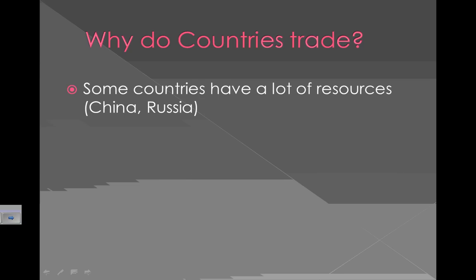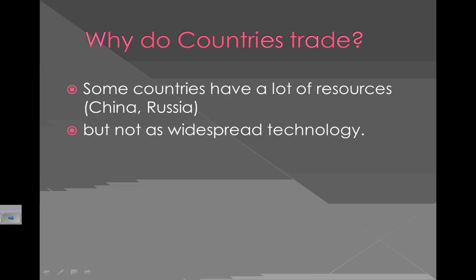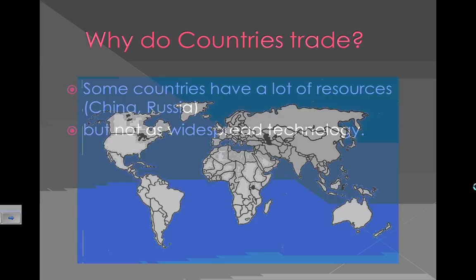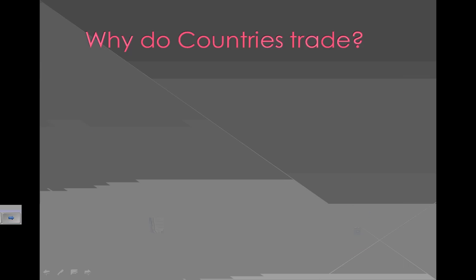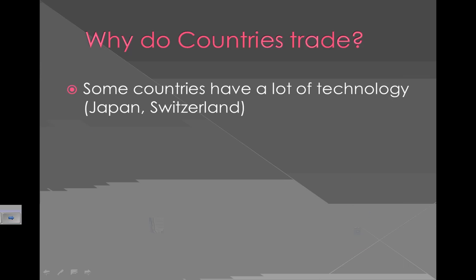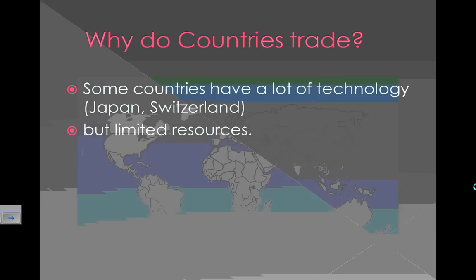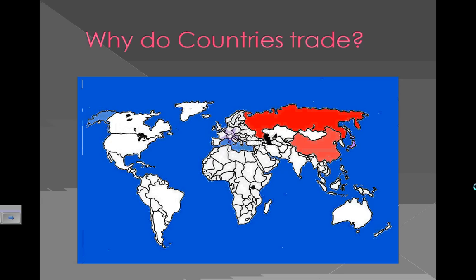Some countries have a lot of resources, such as China or Russia, but they don't have as widespread technology in order to use those resources to their maximum potential. Russia and China have a lot of resources, but then there are countries that have a lot of technology, like Japan and Switzerland, but have limited resources. So Japan or Switzerland could import resources from Russia or China, and then create goods using those resources that could be exported to other countries.